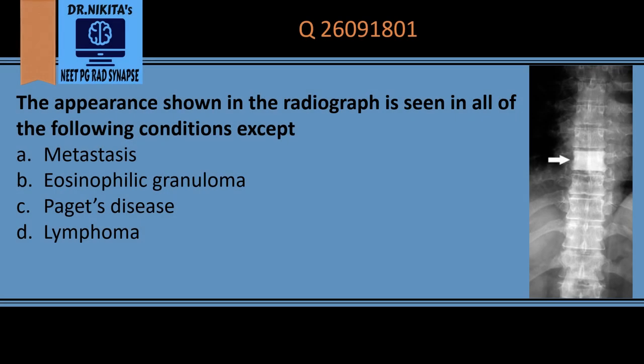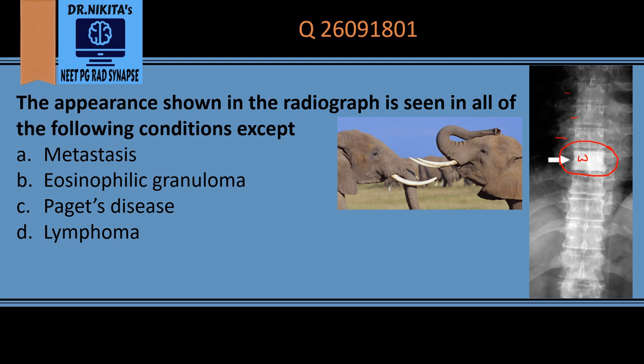The appearance shown in the radiograph is seen in all of the following conditions except... Here we have a vertebra which is abnormal — the abnormality is that this vertebra is white compared to the rest. This is white like ivory, so it is known as ivory vertebra. Ivory vertebra is a vertebra which is white like ivory, and the adjacent intervertebral discs are normal.